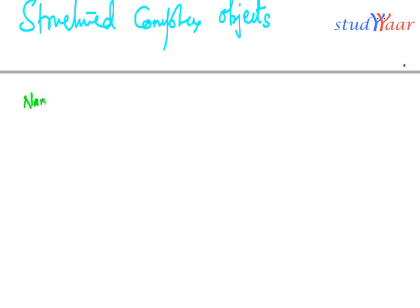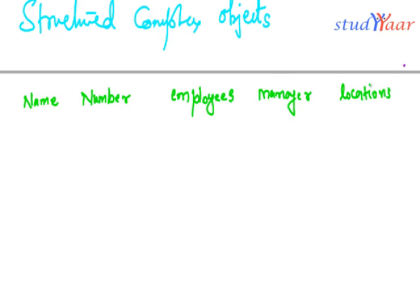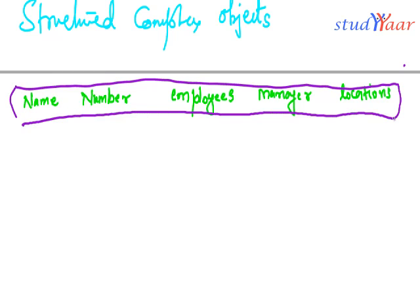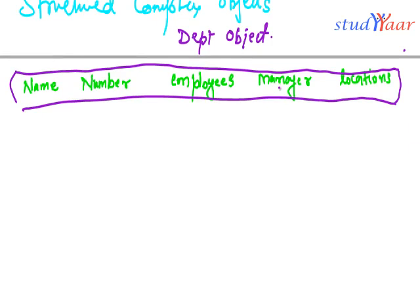What would my tuple look like? It would have attributes such as a department name, a department number, employees in this department, a manager, and locations. So this becomes my tuple for a department object. Now understand that name is an atomic object inside the department object, number is also an atomic object, and employees would be a set of objects.